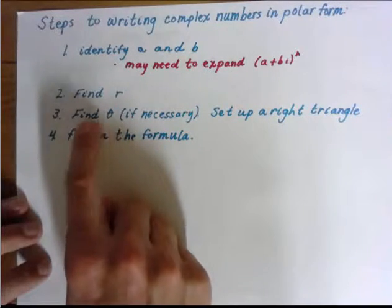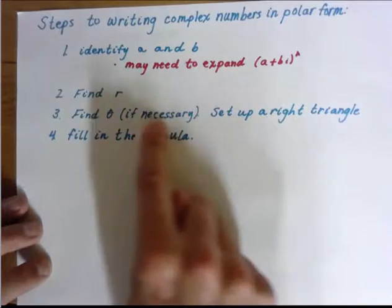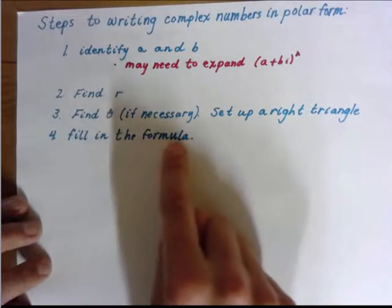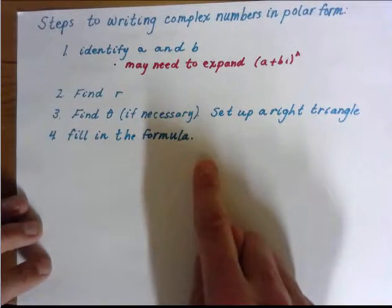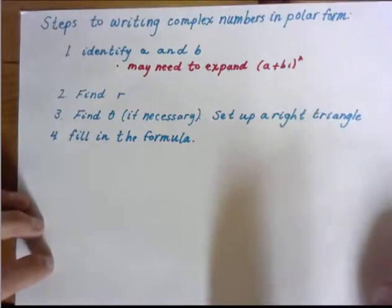Then I like to find theta. And this here will probably be the most tedious step. And then the last part is you just fill in the formula. Z equals R times the quantity cosine theta plus I sine theta.